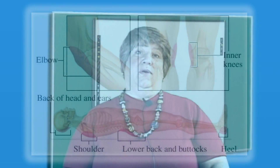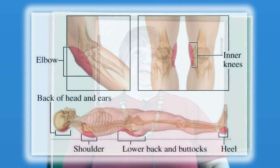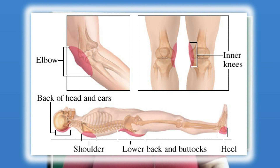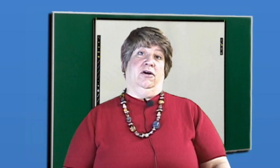Next, you want to pay particular attention to any areas that are most likely to break down. We know that the bony prominences — the elbows, the heels, the ischium, the sacrum — these are areas that are particularly vulnerable in terms of pressure.